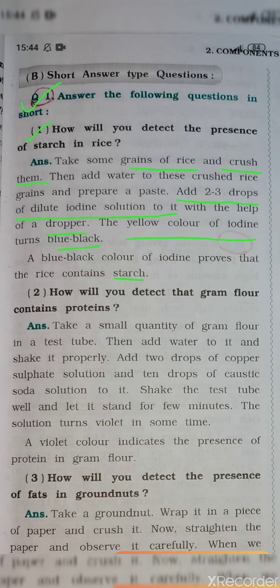For this question, you need some apparatus and material: grains of rice, water, 2-3 drops of dilute iodine solution, and a dropper. You need to crush some rice, then add water to the crushed rice grains and prepare a paste. After that, add 2-3 drops of dilute iodine solution. The iodine solution is yellow in color and it turns blue-black. A blue-black color shows that it contains starch.